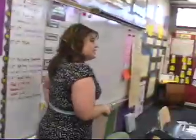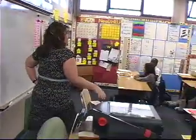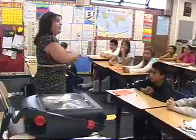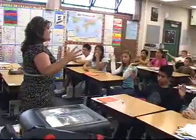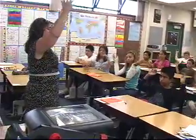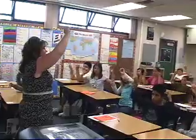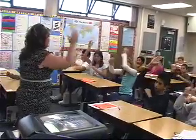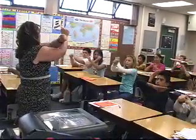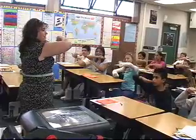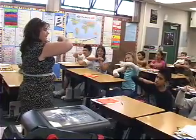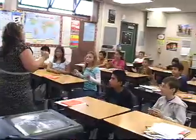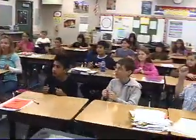Let's run through the order of operations again. The whole thing is like this: P is for parentheses, E is for exponents, M is for multiply, D is for divide, A is for adding, and S is for subtracting.